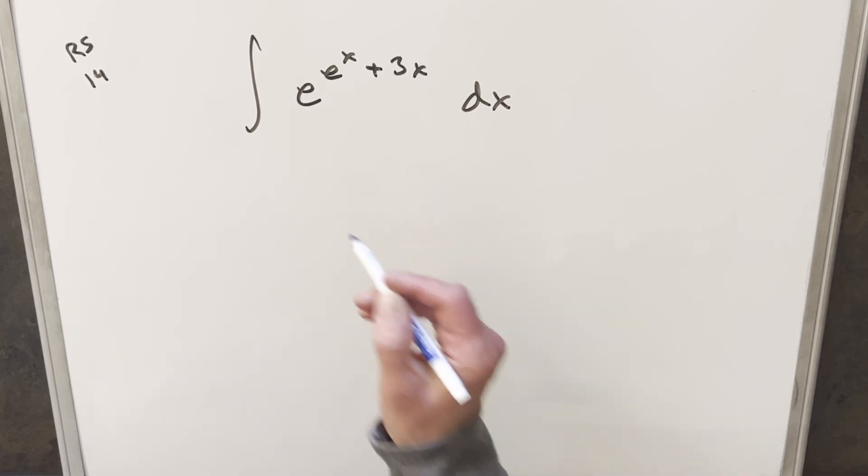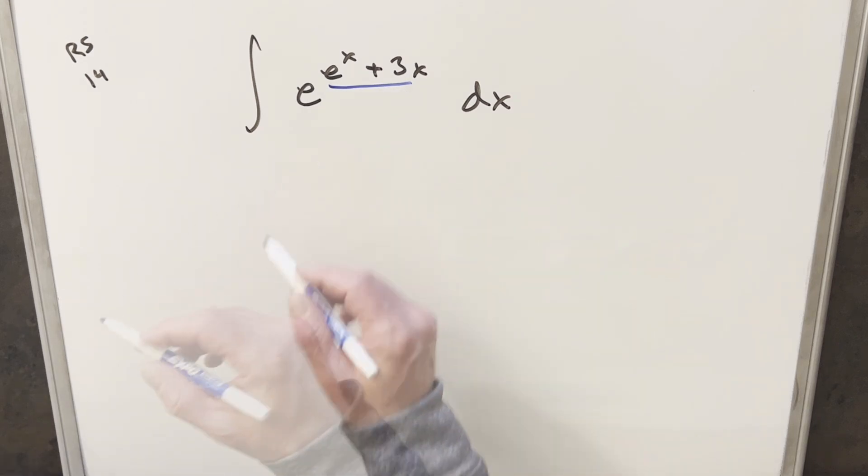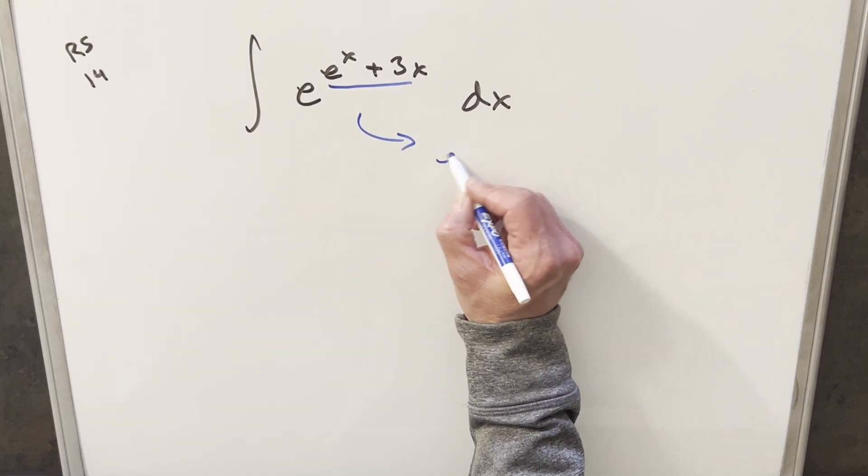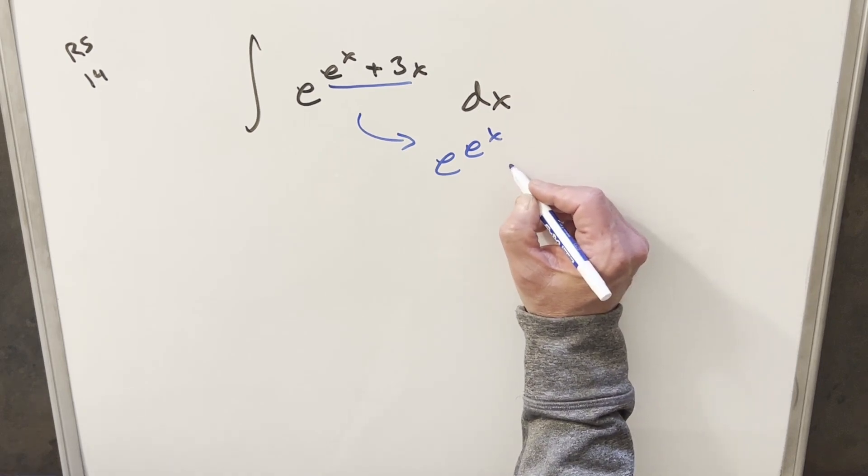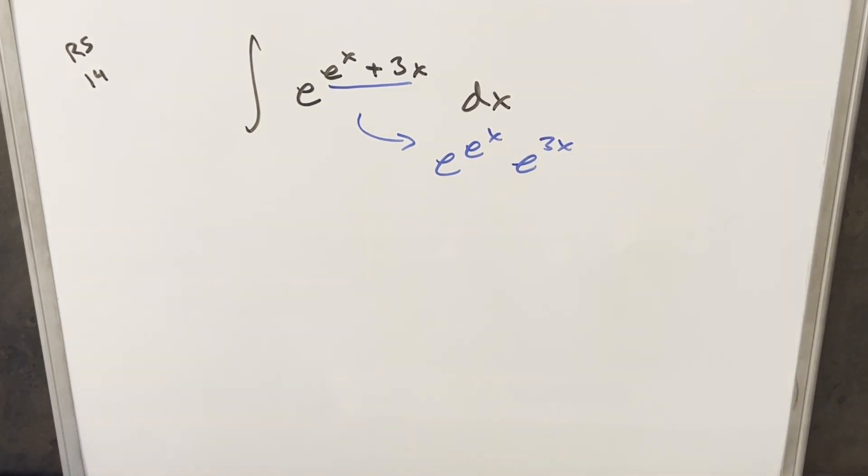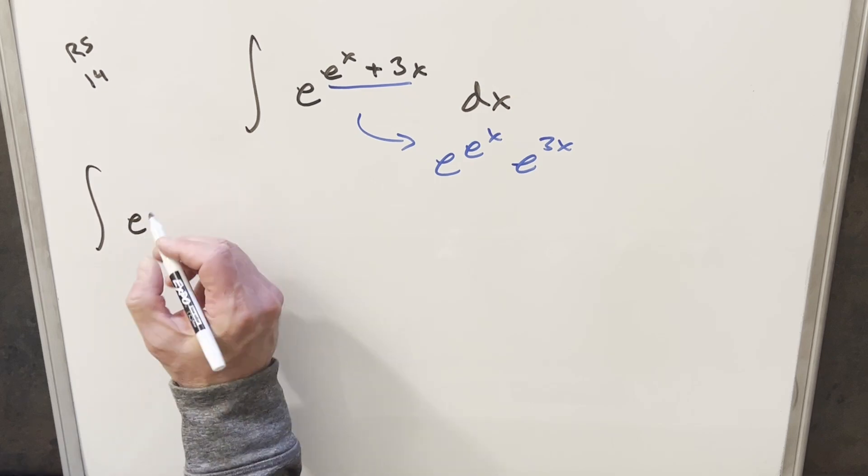Now to get started with this, whenever I see addition in the exponent like this, my thinking is to break this up and write it as multiplication. So I can rewrite this as e to the e^x times e to the 3x. And then actually let me put it back in the integral.